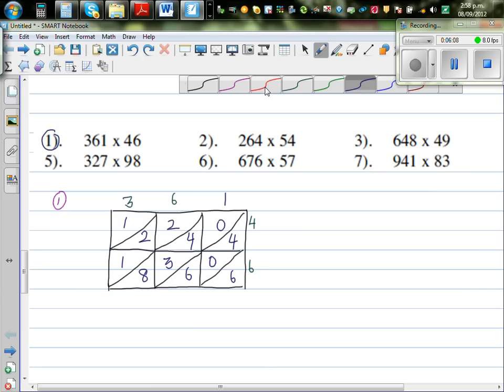And now the answer. So this is 6. 6 plus 4 is 10, remainder 1. 1 plus 4 is 5, plus 3 is 8, plus 8 is 16, remainder 1. The answer is 16,606.